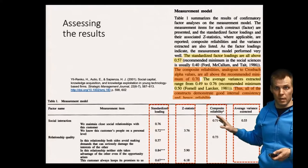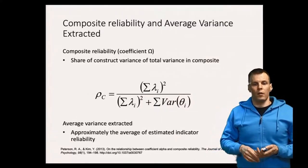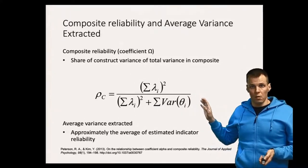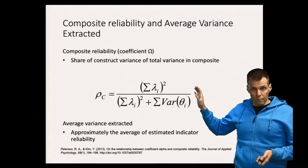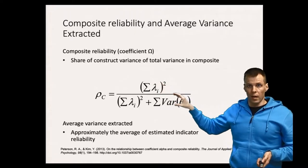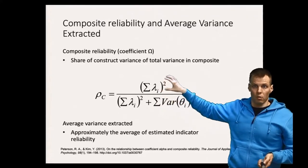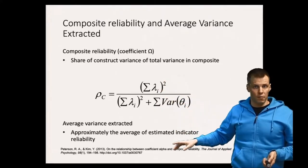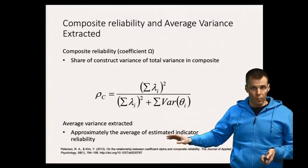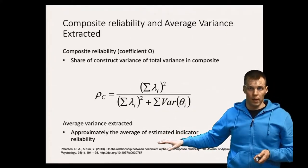The assumptions are basically the same as with alpha. The composite reliability index and average variance extracted are presented with these kind of equations. Composite reliability is the variance due to the factor divided by the total variance of the composite. Average variance extracted is approximately the average of the estimated indicator reliability of the scale — approximately, not exactly, because of some nuances in how it's calculated.